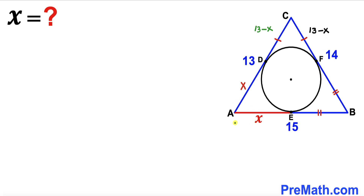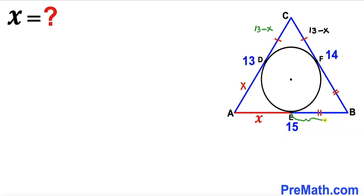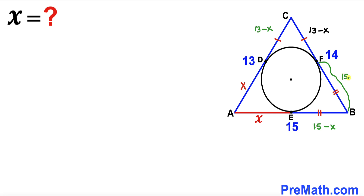Since segment AE is X, and the whole side length AB is 15, the remaining tangent segment EB is going to be 15 minus X. Since tangents EB and BF are congruent, segment BF is also 15 minus X.